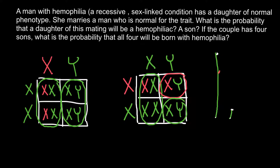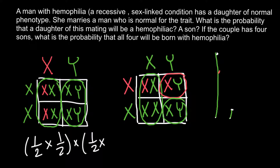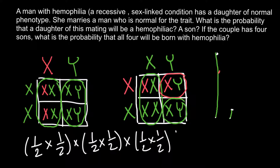Now we can move to the final part of our calculations. If a couple has 4 sons, what is the probability that all 4 will be born with hemophilia? This is the trickiest part. One approach: the probability that the first child is a boy is one half, multiplied by the probability that he is hemophiliac — also one half — multiplied by the probability that the second child is also a boy with this genetic disorder, and so on for the third and fourth. A second, simpler variant would be to just multiply the probability that each boy is hemophiliac.